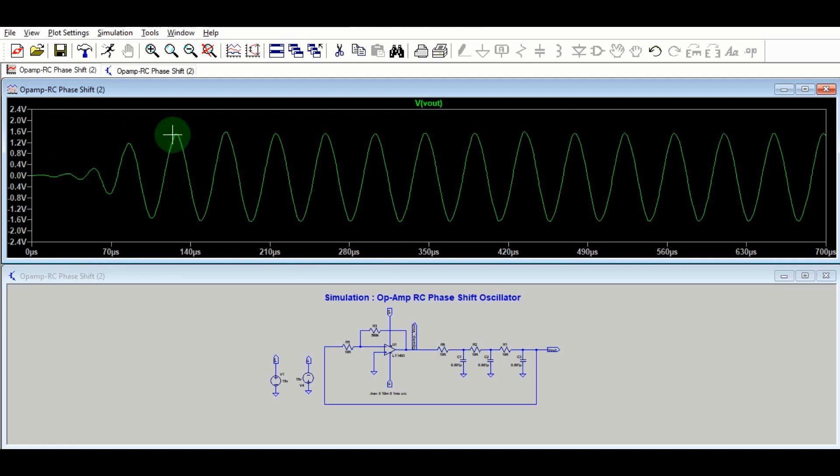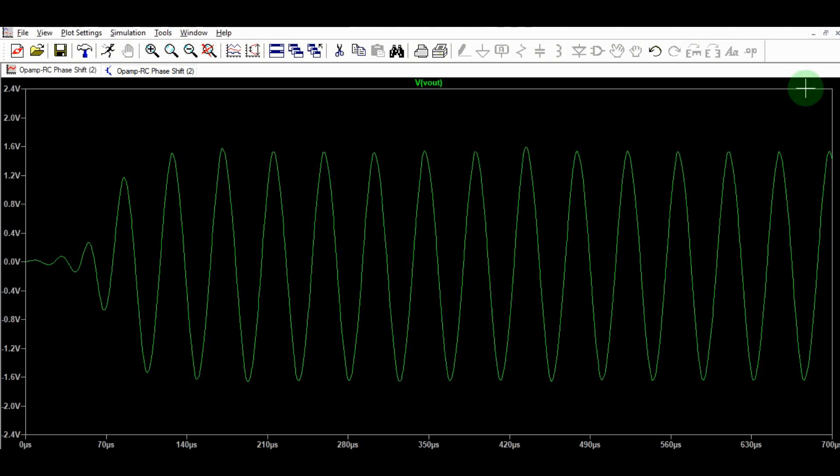You can see here, after a certain point of time, let's say at this point, your oscillator has got a sustained oscillation. Now throughout your time period your oscillator is having sustained oscillation and its amplitude is now constant. Let me zoom this waveform, zoom more closer to it.